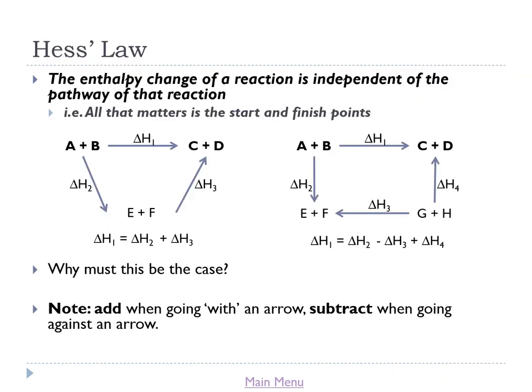Hess's law. This is where the real meat of this topic starts. Hess's law very simply states that the enthalpy change of a reaction is independent of the pathway of that reaction. We can paraphrase that by saying all that matters is the start and finish points of the reaction. Really, what Hess's law gives us is a broader range of options for measuring the enthalpy change of a particular reaction.